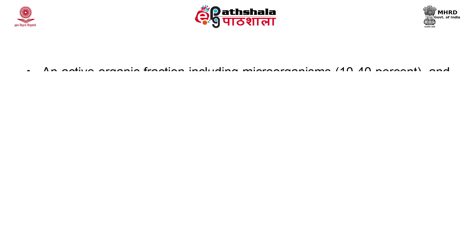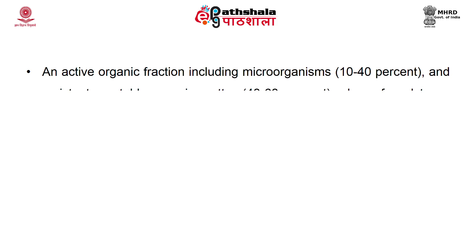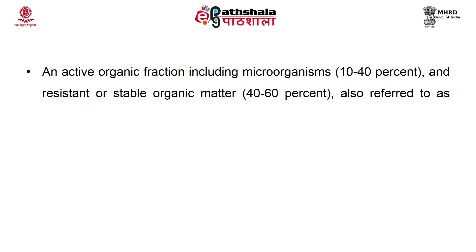Next is soil organic matter. On the basis of organic matter content, soils are characterized as mineral or organic. Mineral soils form most of the world's cultivated land and may contain from a trace to 30 percent organic matter. Organic soils are naturally rich in organic matter, principally for climatic reasons. Although they contain more than 30 percent organic matter, it is precisely for this reason that they are not vital cropping soils.